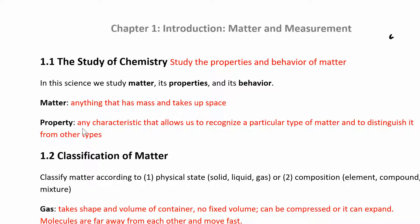We're going to look at chemical properties and physical properties. All these properties are really related to the kinds of atoms that the matter contains — what we refer to as composition — as well as the structure, which is the arrangement of the atoms. You can classify matter a few different ways.